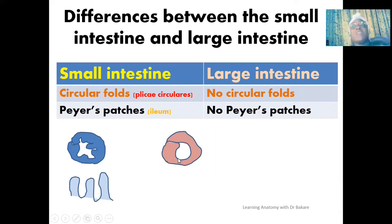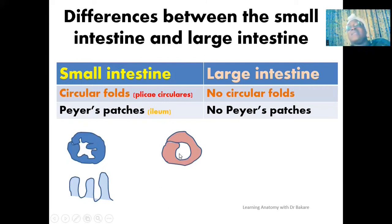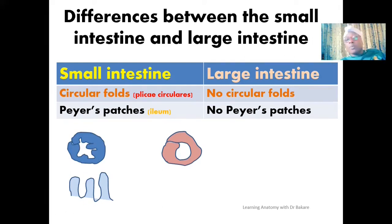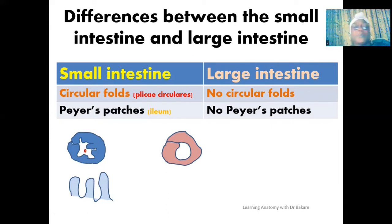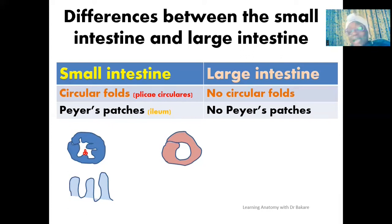While in the large intestine there are no infoldings, and combined with the absence of digestive enzymes and intestinal juice, less digestion and absorption occur there. Also, the small intestine contains Peyer's patches — collections of lymph follicles highlighted in red — found at the ileum, which is the terminal region of the small intestine, and they serve an immune function. Peyer's patches are not seen in the mucosal lining of the large intestine.